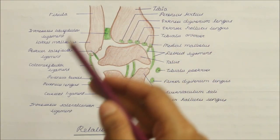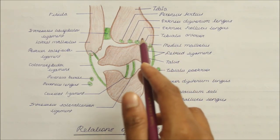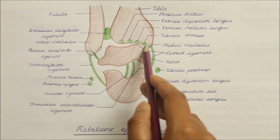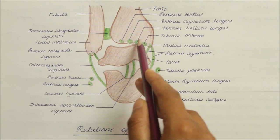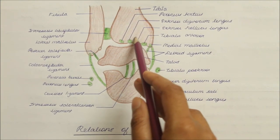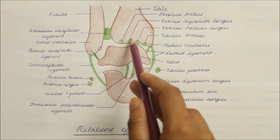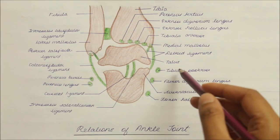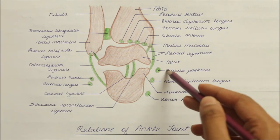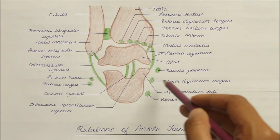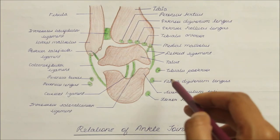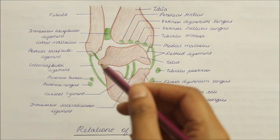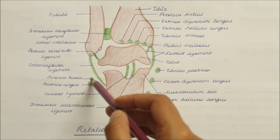Looking at the relations of the ankle joint: anteriorly, from medial to lateral, there are the tibialis anterior, the extensor hallucis longus, the anterior tibial vessels and the deep peroneal nerve, the extensor digitorum longus and the peroneus tertius. Posteromedially, from medial to lateral, there are the tibialis posterior, the flexor digitorum longus, the posterior tibial vessels, the tibial nerve and the flexor hallucis longus. Posterolaterally, the relations are the peroneus longus and peroneus brevis.